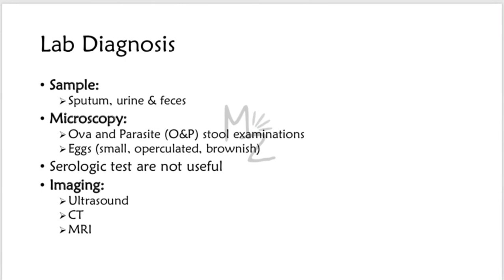For lab diagnosis, samples collected include sputum, urine, and feces. Diagnosis is made by finding the typical small brown operculated eggs in the feces under the microscope. Ova and parasite stool examinations (O&P) are also important. Serologic tests are not useful. Certain imaging techniques like ultrasound, CT scan, and MRI are also useful.